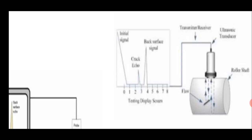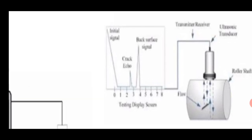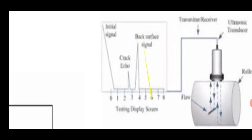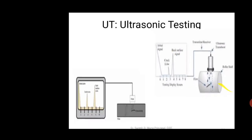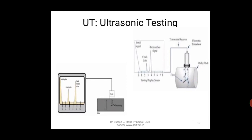The transducer — shaped like a torch — generates the ultrasound and passes it into the metal. The sound is reflected and comes back. The pulse generator both generates and receives the sound waves and transmits to the monitor. You can see the initial signal and at position four the back echo. In case of a crack, the crack also gives its own echo and you can find out the position and size of the crack. This is known as ultrasonic testing.